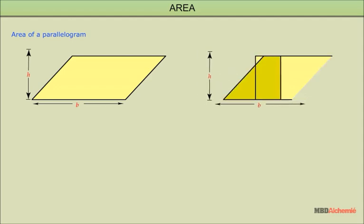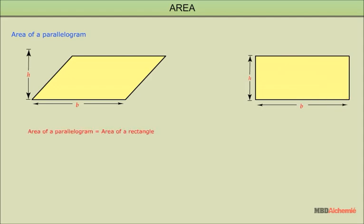After this, we will place the cutout part on the right hand side to form a rectangle. So we can say that the area of a parallelogram is equal to the area of a rectangle, that is B × H.